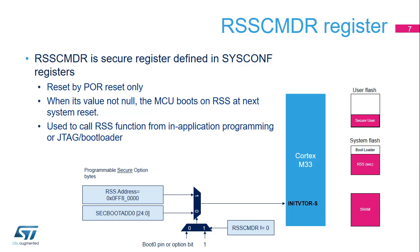RSS-CMDR is a register defined in the sysconf module. It is used to pass a command to be executed by the RSS. When the value in this register is non-null, the MCU will boot on RSS at the next system reset, knowing that this register is only reset by a power-on reset. Therefore, the RSS-CMDR register enables a bootloader to call RSS after applying a warm reset to the microcontroller. This can be done by an in-application programming bootloader, or a JTAG or serial wire bootloader.